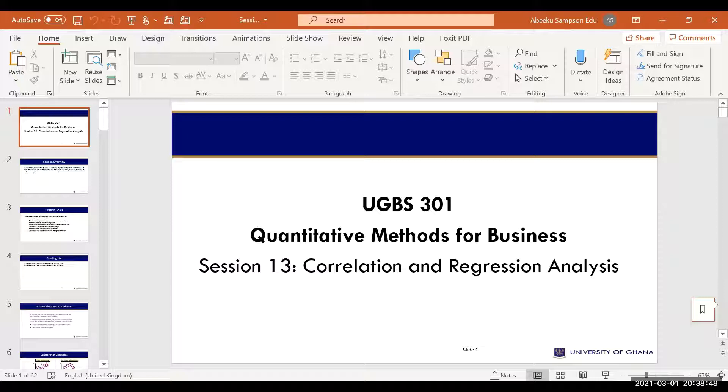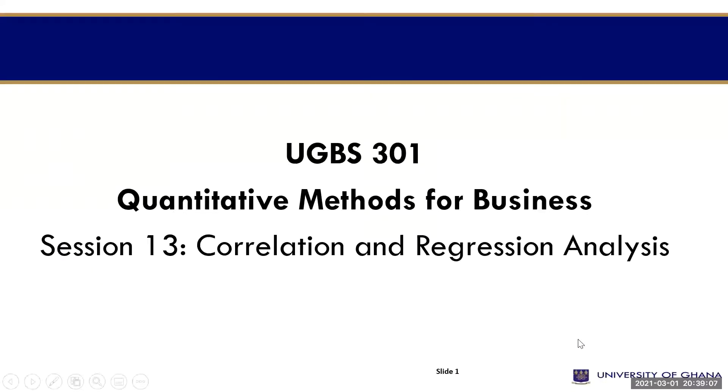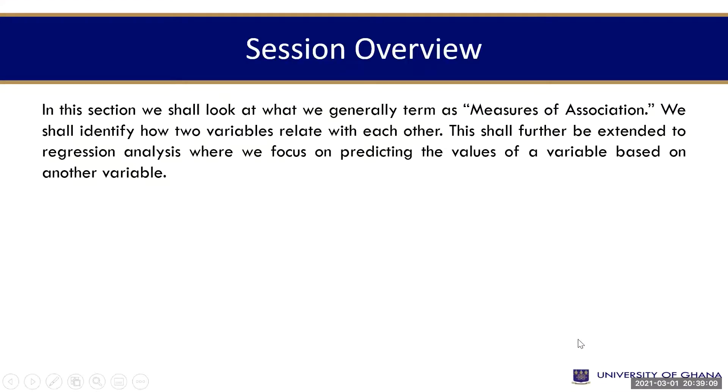This time around, we are using variables. Working capital can be a variable. Profitability can also be a variable. What is the causal relationship? Then we say that we are using what we call correlation and regression analysis. That is our last discussion.